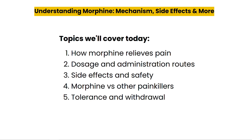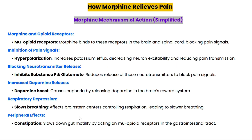So let's break down how morphine works to relieve pain. First, it binds to mu opioid receptors in the brain and spinal cord, which blocks the transmission of pain signals. This reduces the excitability of neurons, making it harder for pain signals to travel. Morphine also inhibits the release of substance P and glutamate, both key pain-related neurotransmitters.